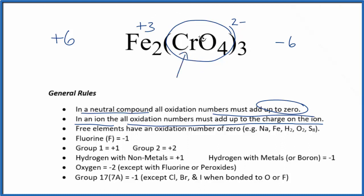If you need help finding the oxidation number for the chromium in the chromate ion, there's a link in the description on how to do that. This is Dr. B with the oxidation number for Fe in Fe₂(CrO₄)₃, iron three chromate. Thanks for watching.